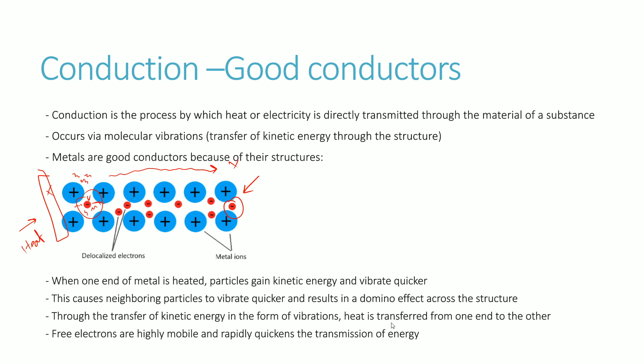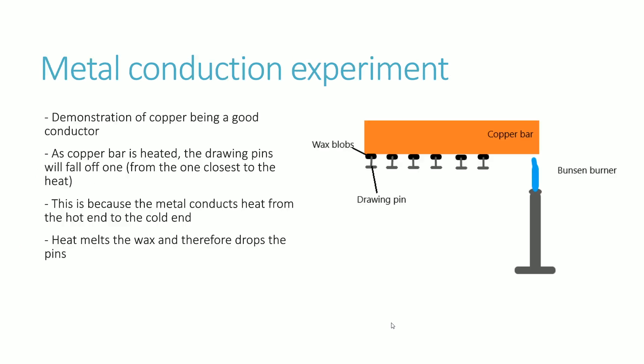A common theme of good conductors is that they usually have free electrons that help assist with transmission, and therefore most metals are good conductors as a result, because metals have free electrons by nature.